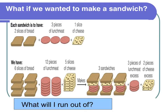We can obviously make three complete sandwiches, but after that we run out of bread. So we have some extra lunch meat and some extra cheese. We call bread the limiting reactant — it is the ingredient we ran out of first. The lunch meat and cheese are our excess reactants, what we have leftovers of. I need to go to the store and get some more bread.